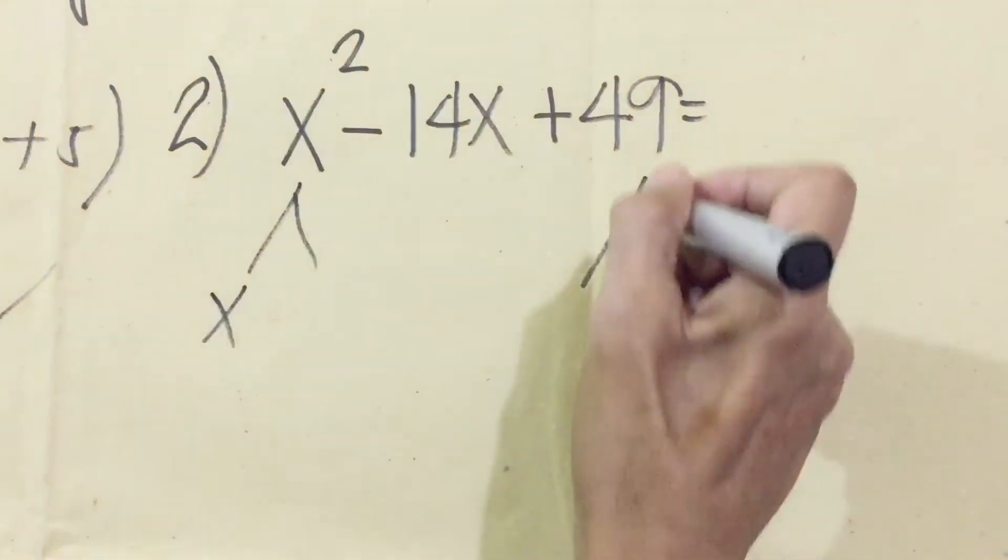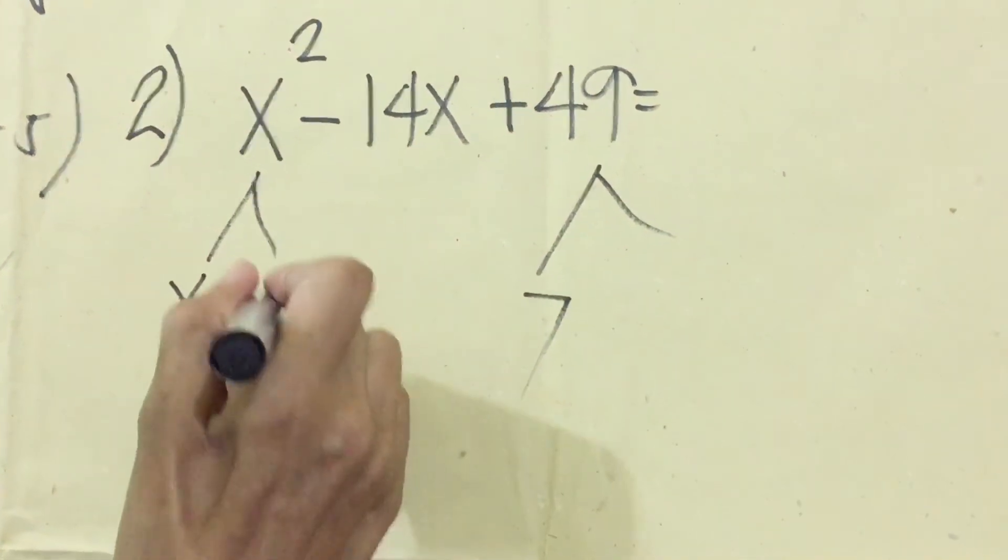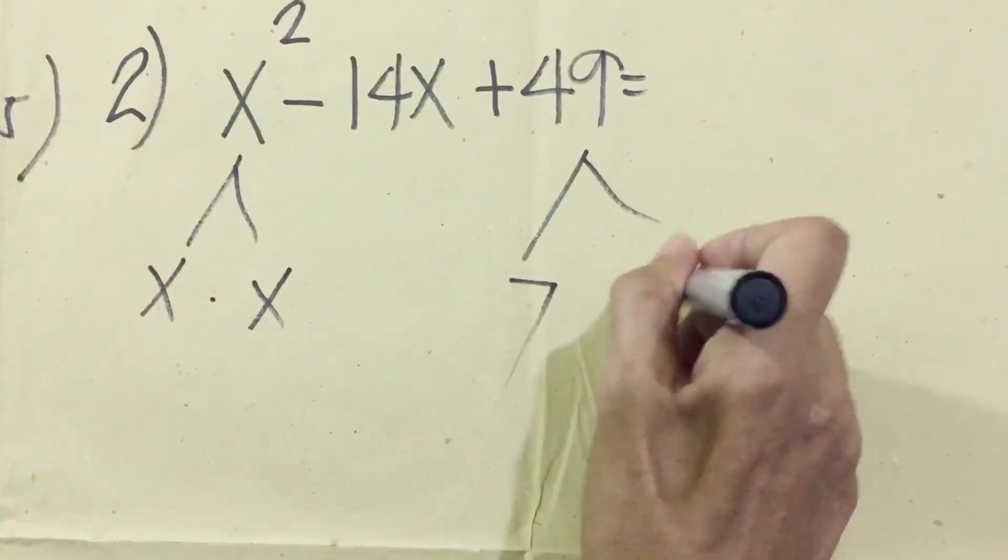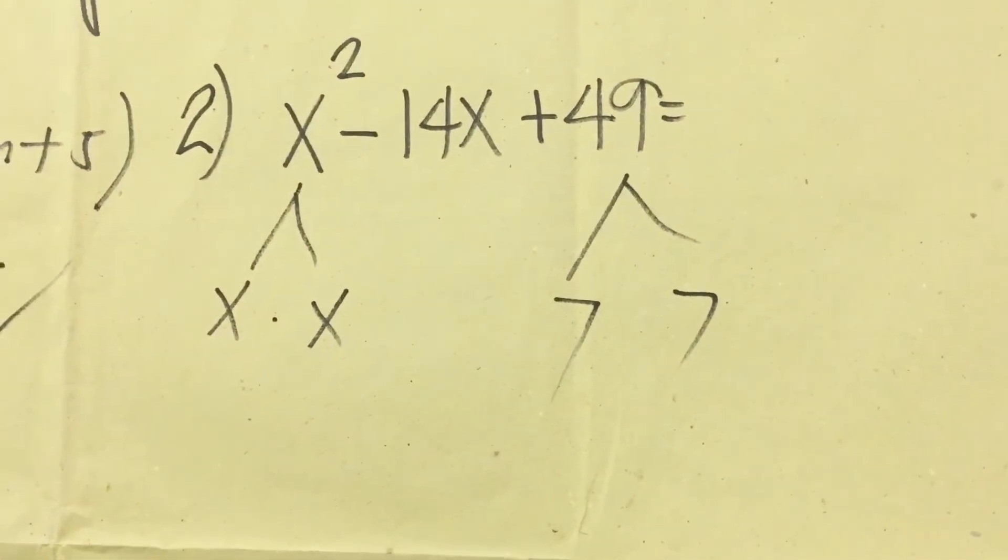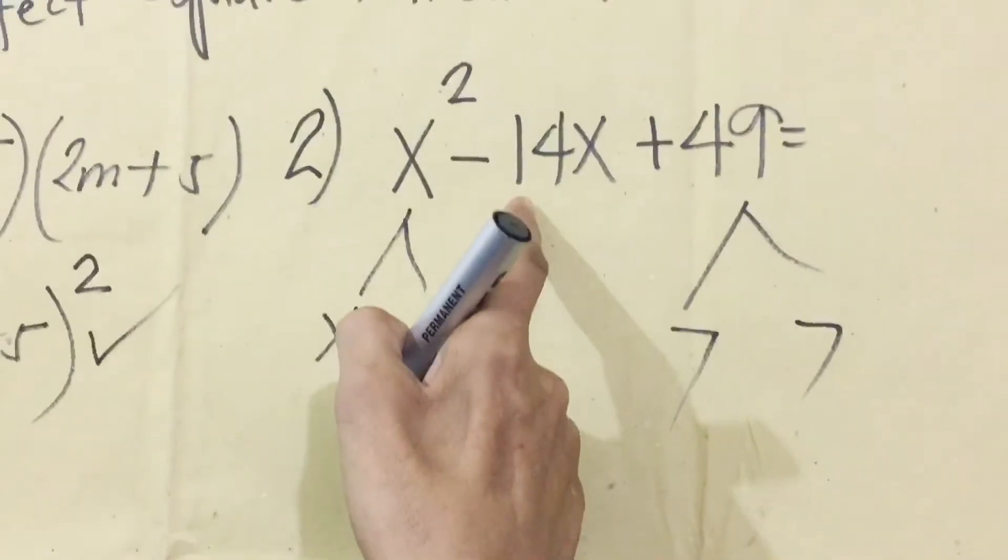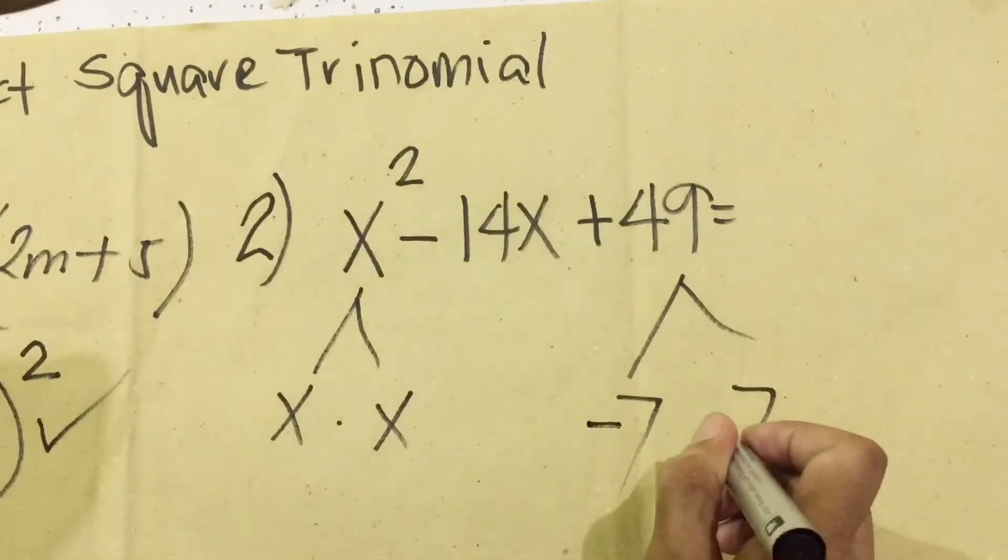The square root of 49 is 7. Then we will get the factor: x times x equals x², and the factor is 7 times 7 equals 49. We are going to determine the middle term, so it should be -14.